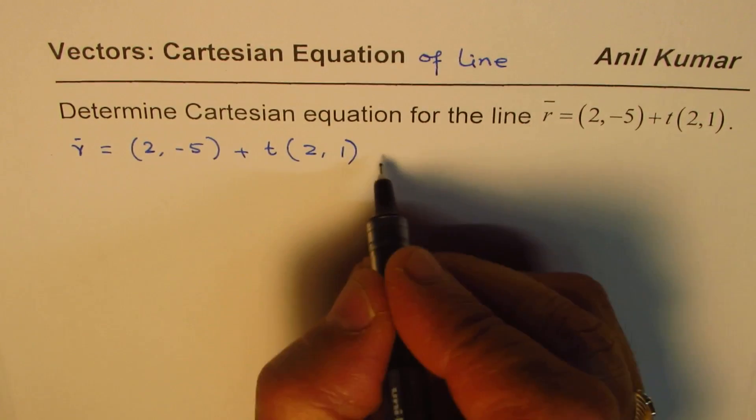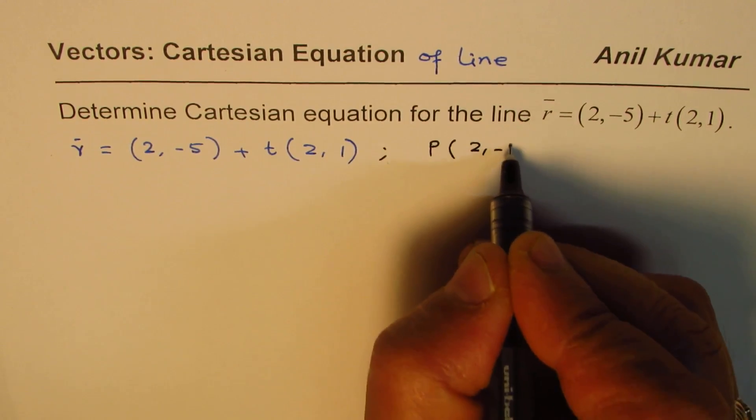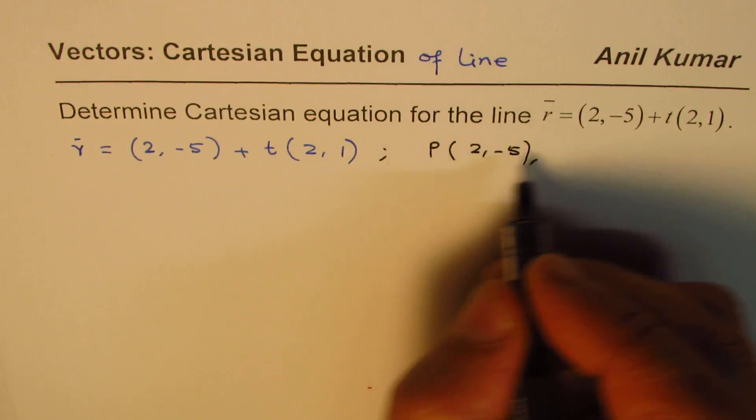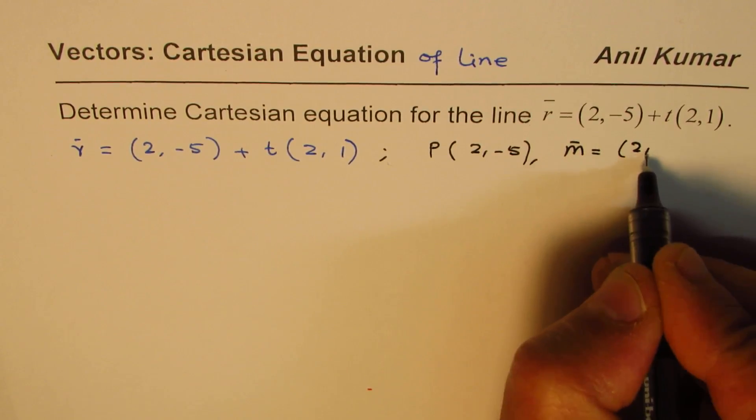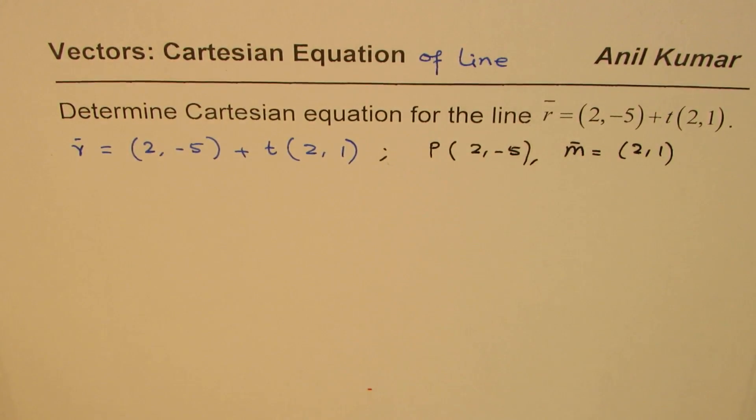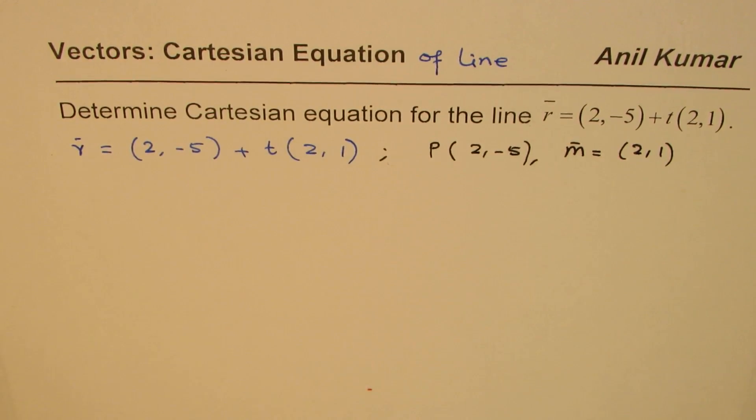One, we are given that the point P is 2, -5 and we are also given that the direction m is 2, 1. So in vector form, that is the information which is always given. Now we want to write in Cartesian form.